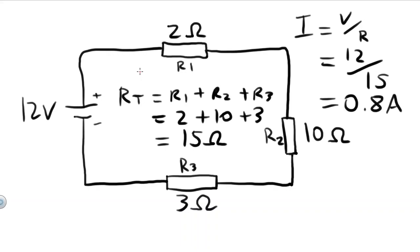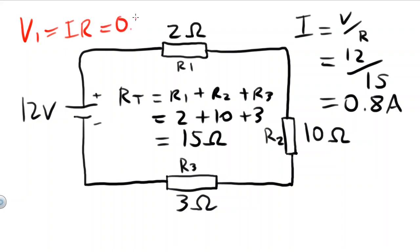For resistors in series, the current across each resistor remains the same, so each of these three resistors will have a 0.8 amp current. However, there is a voltage drop across each resistor, and we can calculate that just by using Ohm's Law. The voltage drop across the first resistor, V1, will equal I times R, which equals 0.8 times 2, which equals 1.6 volts.